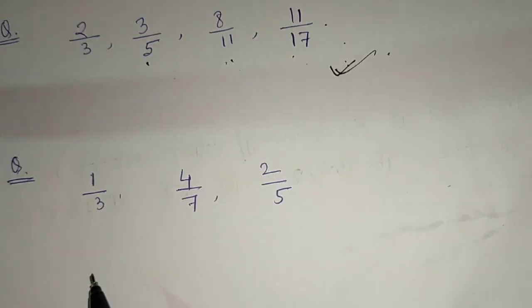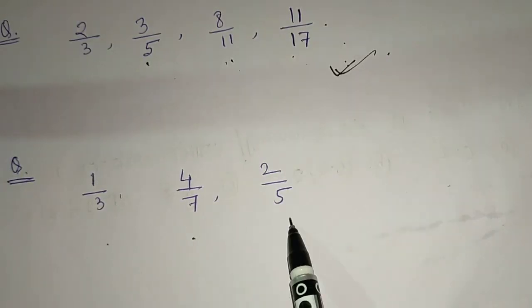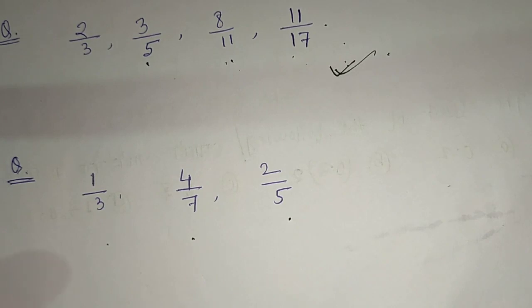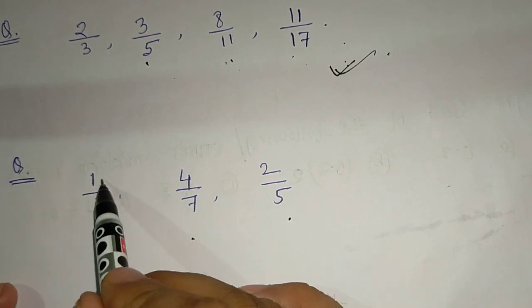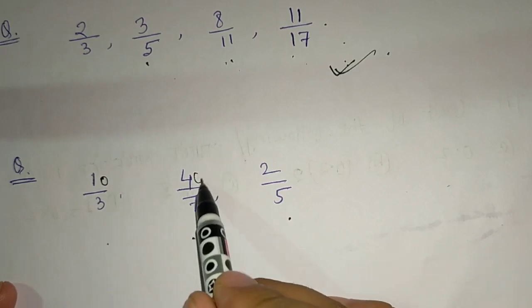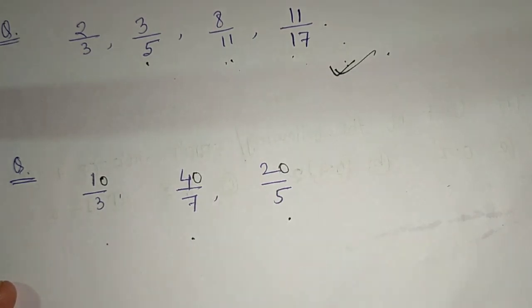This one is 1 by 3, 4 by 7, 2 by 5. 1 by 3, 4 by 7, 2 by 5. The difference is 2.